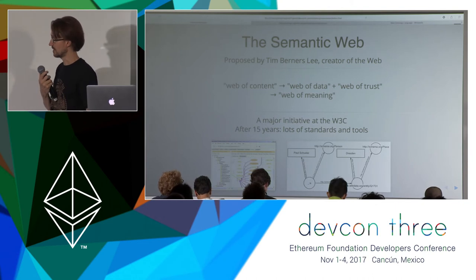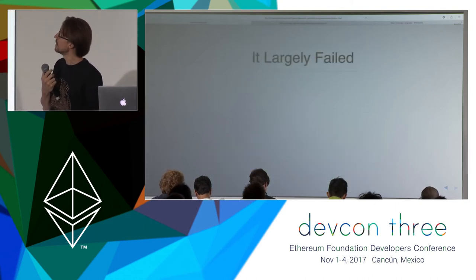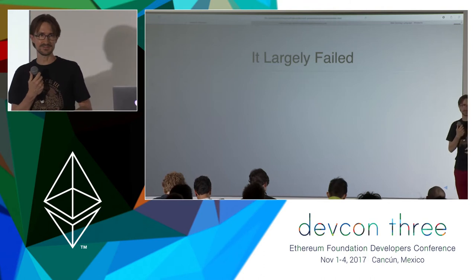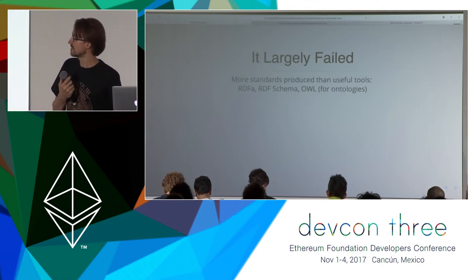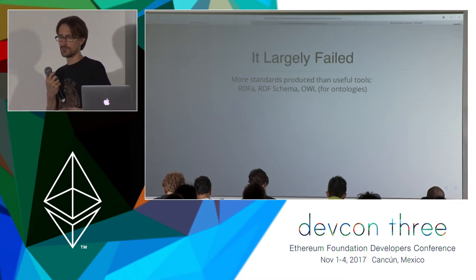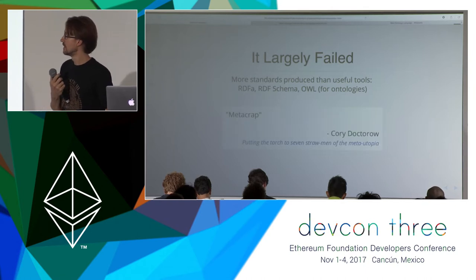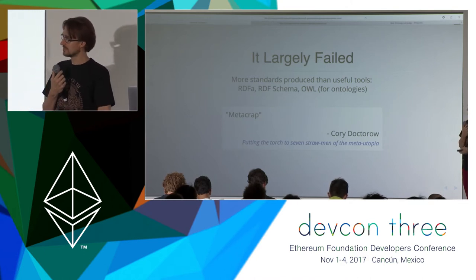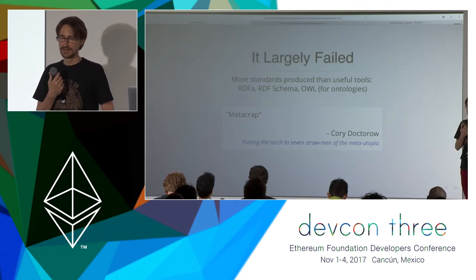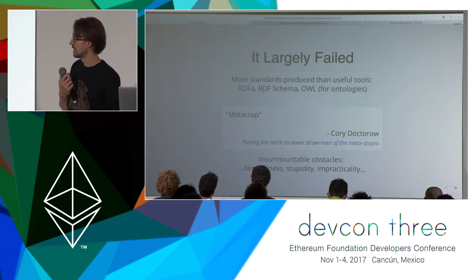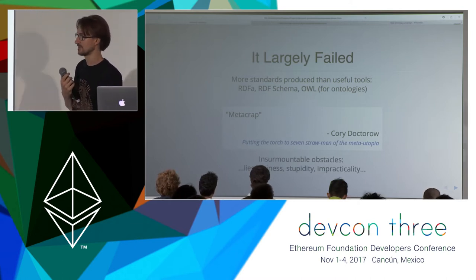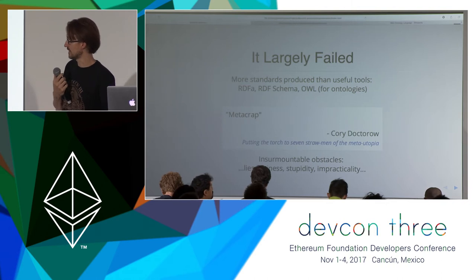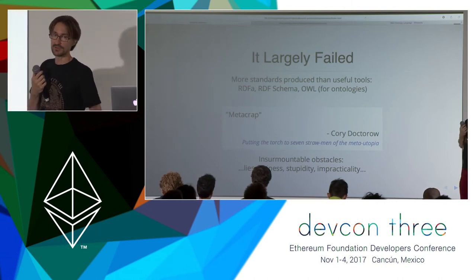Many tools and standards came out, lots of interesting diagrams describing how things connect together, but it largely failed. You'll find many articles about how the semantic web was a complete bust. The standards are out there but they just weren't useful for people and are a bit of a burden to work with. Famously, Cory Doctorow wrote — even before the semantic web was formally a set of standards — a piece attacking metadata itself, calling it 'metacrap.' Very snarky but very insightful. He talked about insurmountable obstacles: lies, laziness, stupidity, impracticality.